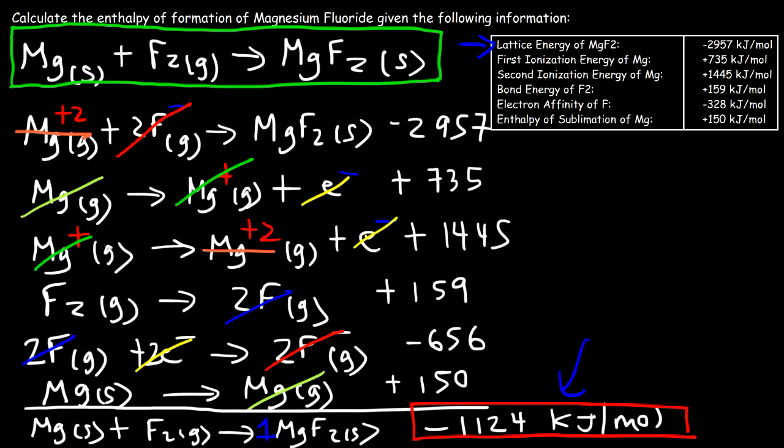Hopefully this video helped you understand how to use these reactions with the Born-Haber cycle. Make sure you know what each of those values means and how to write the associated reactions. If you need more chemistry videos, check out my channel and look for my chemistry playlist — I have a lot of videos organized by topic in order of a typical chemistry course.